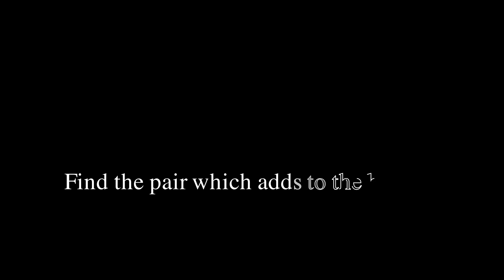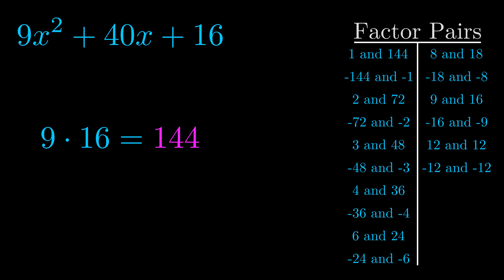The b value is the coefficient on the x term. That's the middle term, the one that we haven't done anything with yet. And really this is the only factor pair that we need.